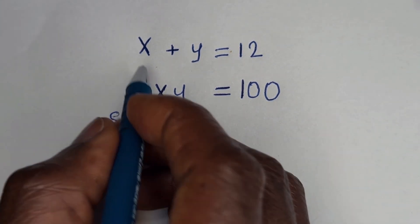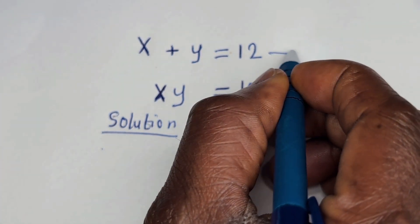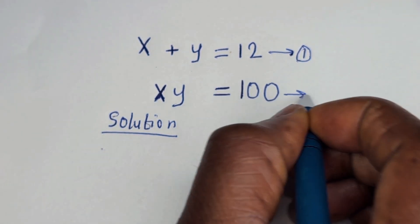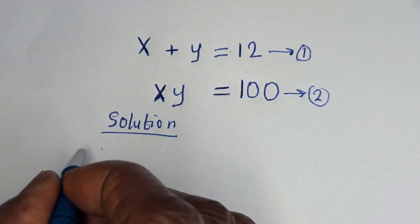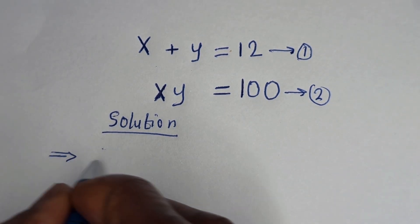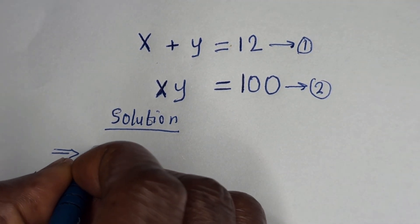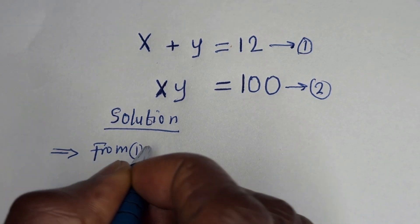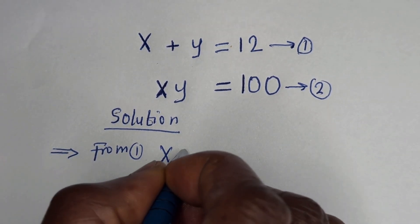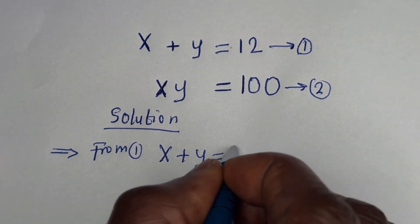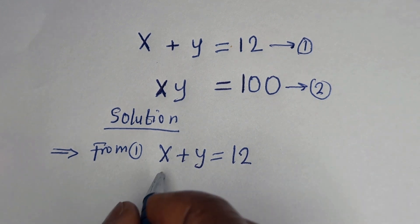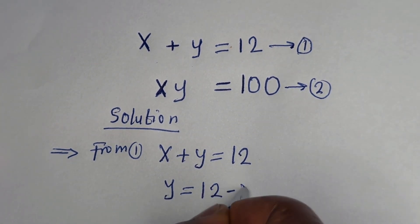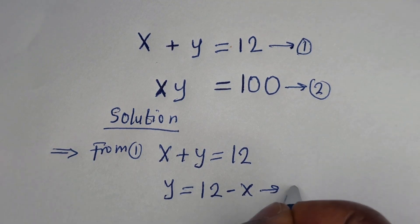We have S plus Y is equal to 12 — let us call this equation 1. SY is equal to 100 — let us call this equation 2. From equation 1, S plus Y is equal to 12, so Y is equal to 12 minus S. Let us call this equation 3.